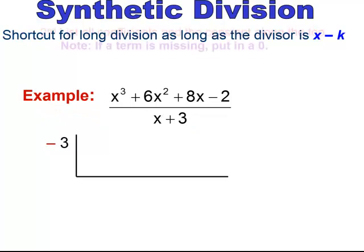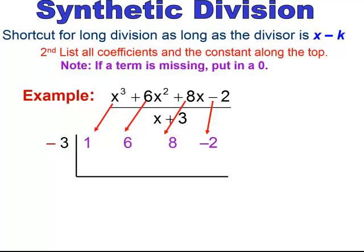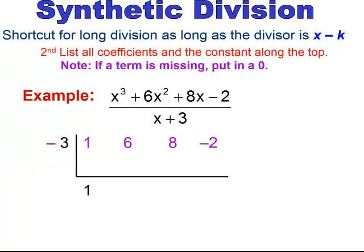Then you're going to list all the coefficients and the constant on the top row. If a term is missing, put a 0 — that would be the coefficient for the missing term. So take all the coefficients of the polynomial you're dividing into and put them in the first row. The coefficient of x to the third is 1, the coefficient of x squared is positive 6, the coefficient of x is positive 8, and your constant is negative 2. Now we start the synthetic division: take the first number and drop it underneath the box, then multiply your divisor to that number and put it in the next column. Negative 3 times 1 gives you negative 3.